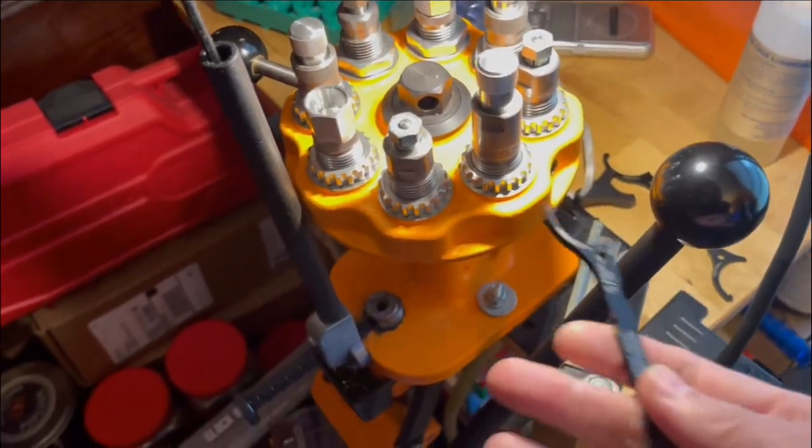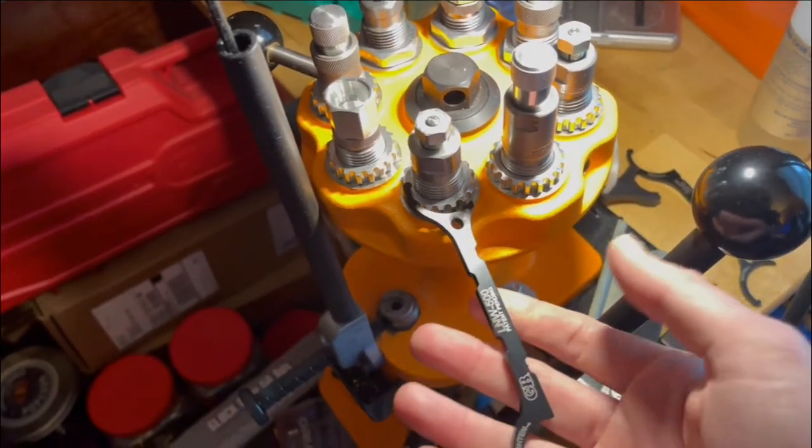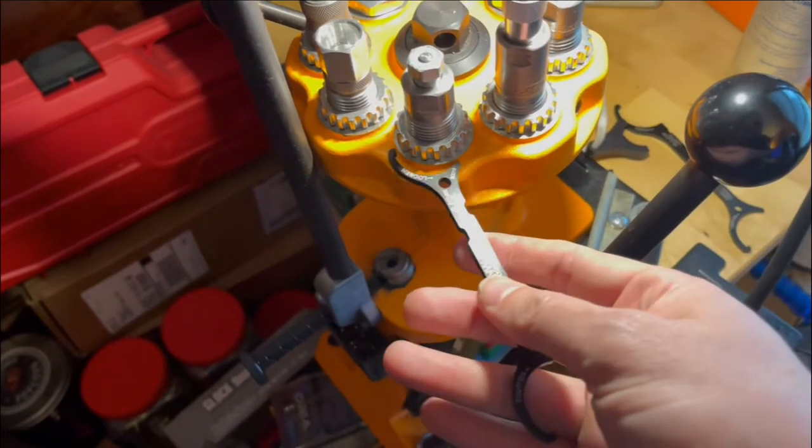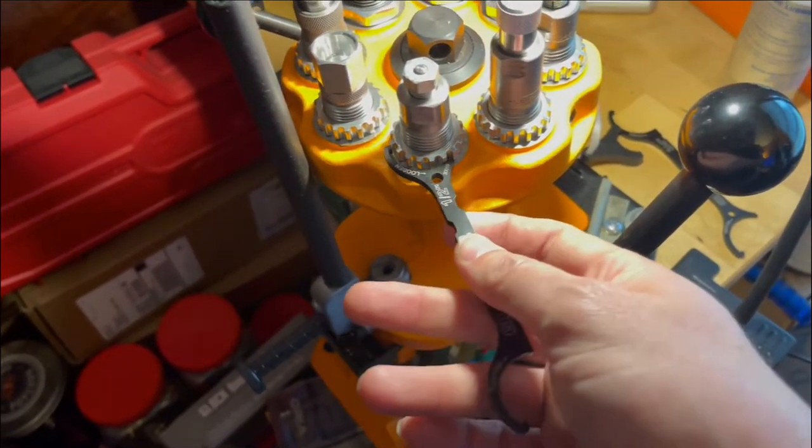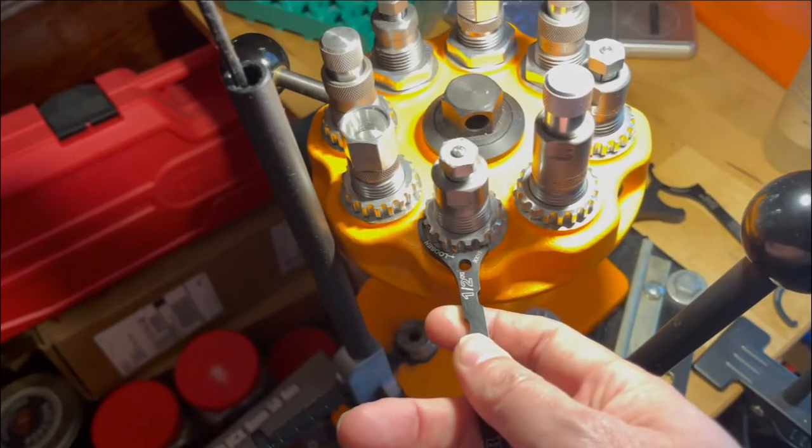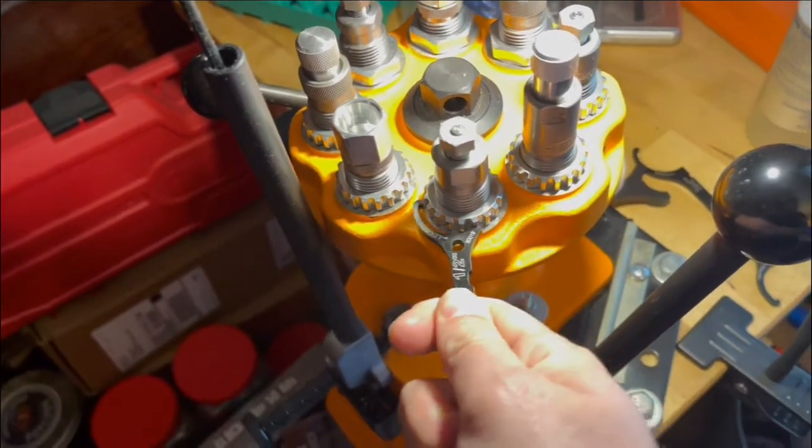And the one you're going to need for the Lee is this half inch one here. But, as you can see, it gives you a longer handle, so you can get just enough grip on there to bite down and then just break it loose.